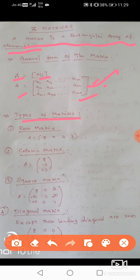Type of matrix. First: Row matrix. What is meant by a row matrix? A matrix that contains only one row — that is, the elements are arranged in a single horizontal line. That is the row matrix.